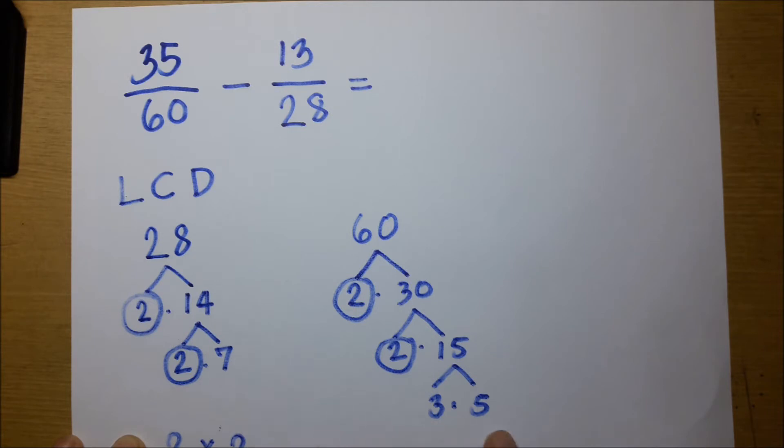Wala nang partner ang 3, wala nating partner 7 at saka 5. So times, kunin natin yung 7, times kunin natin yung 3, times kunin natin yung 5, is equal to...